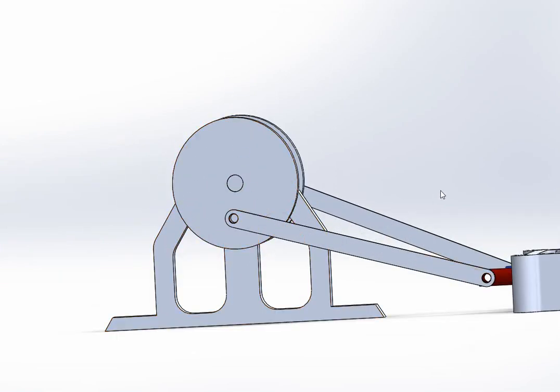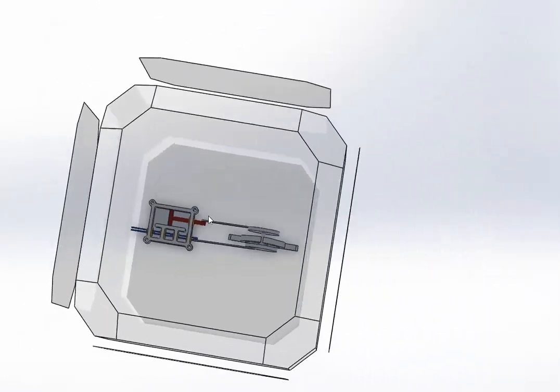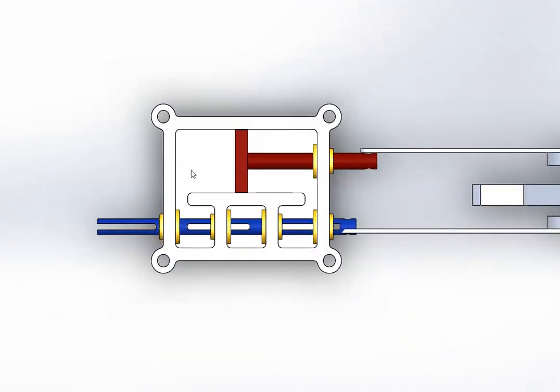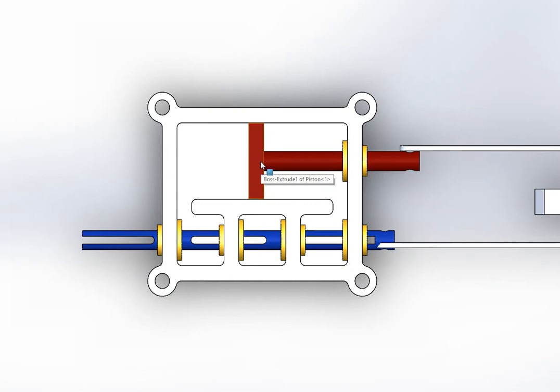So what this does is it keeps both of the parts 90 degrees out of phase. So when the piston is moving as fast as it possibly can, the valve should be stopped.